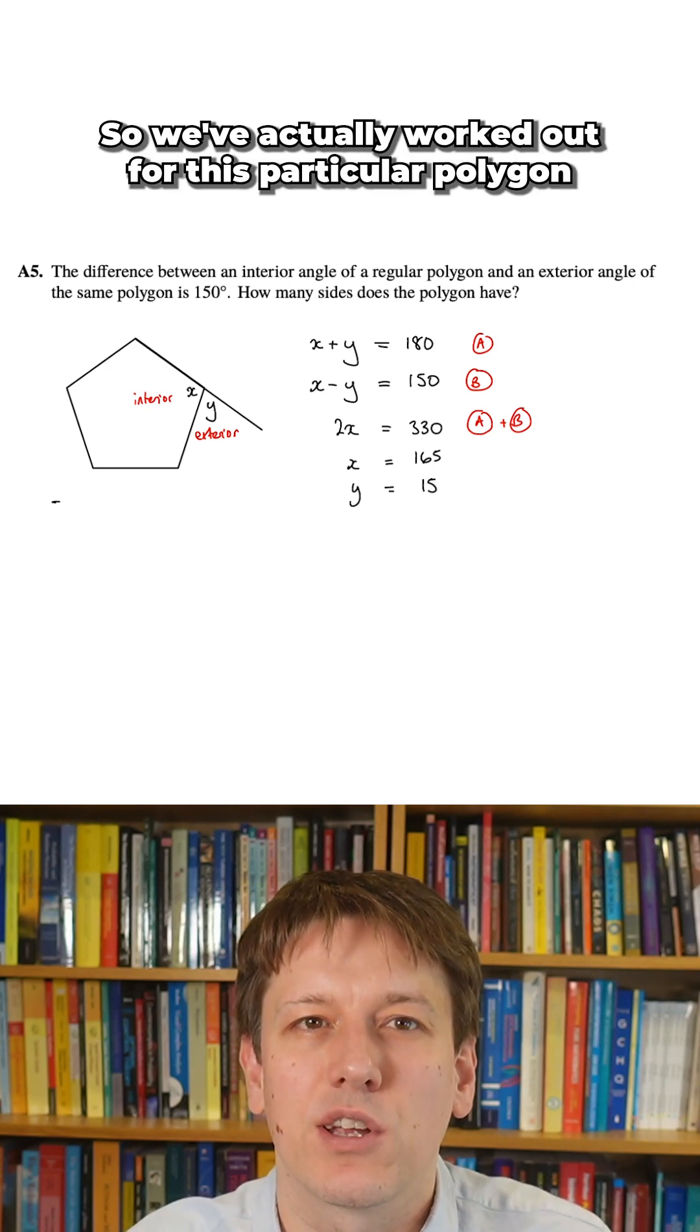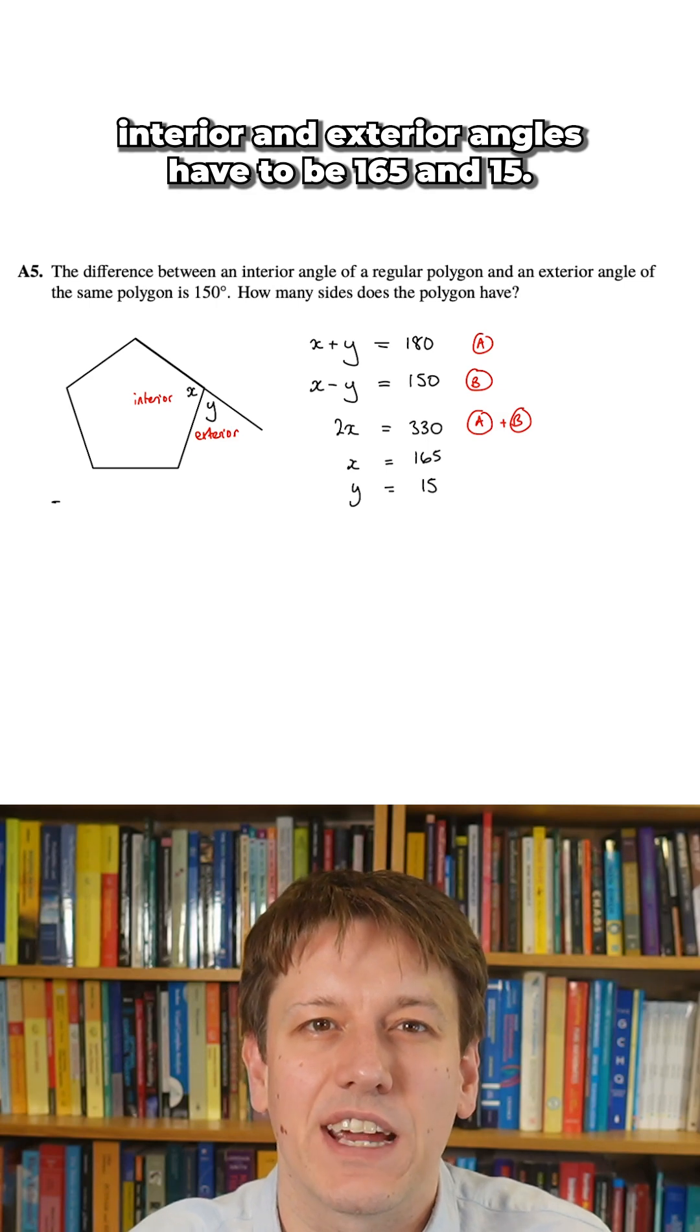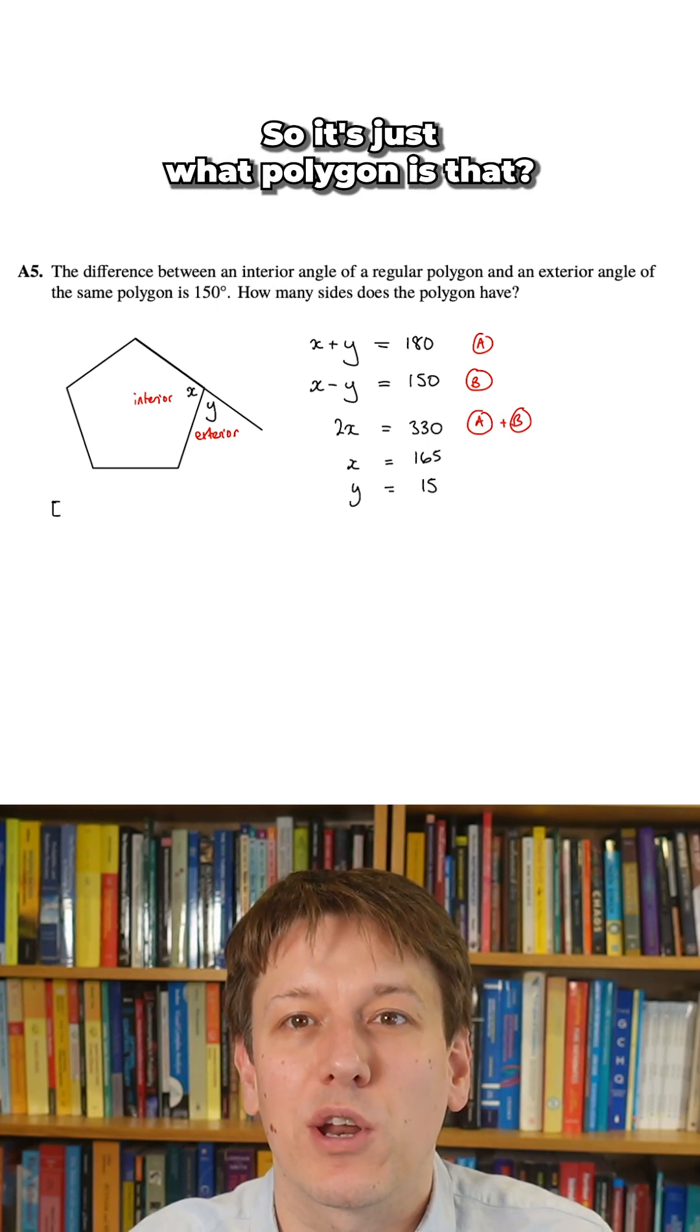So we've actually worked out for this particular polygon, the interior and exterior angles have to be 165 and 15. So it's just what polygon is that?